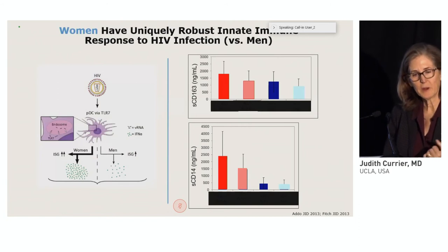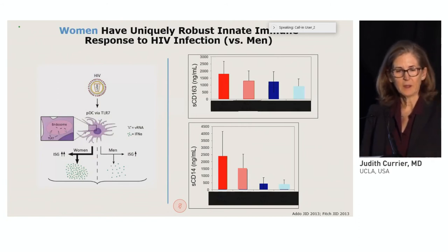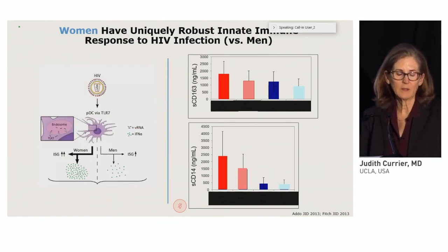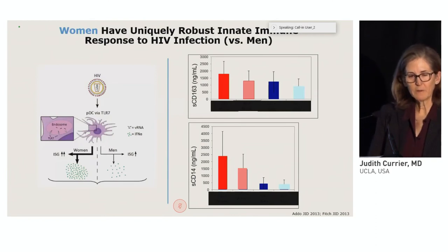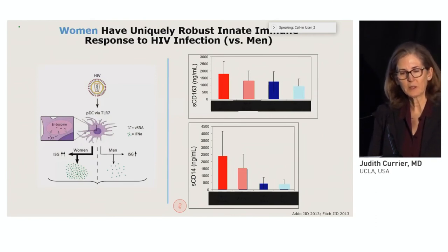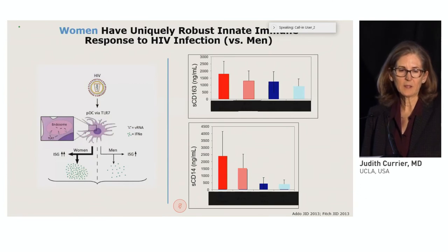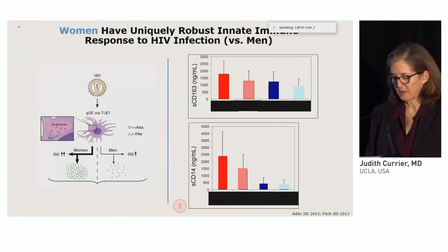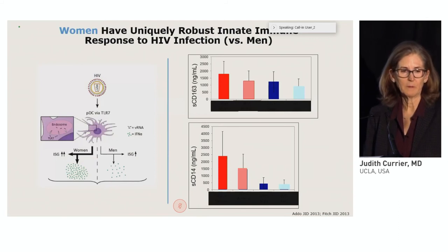These are four bars — the red represents women living with HIV, the pink women without HIV, dark blue men living with HIV, and light blue men without. You can see that levels of soluble CD163 and soluble CD14, both markers of monocyte and immune activation, are higher for women than they are for men.